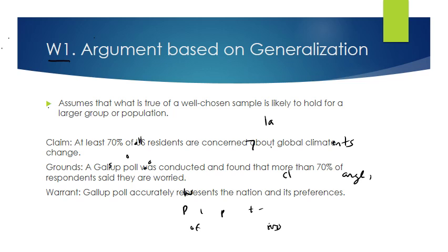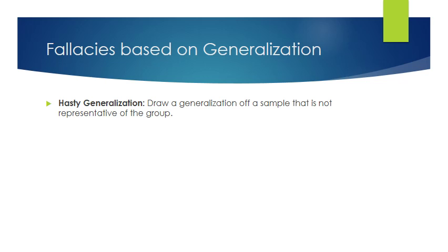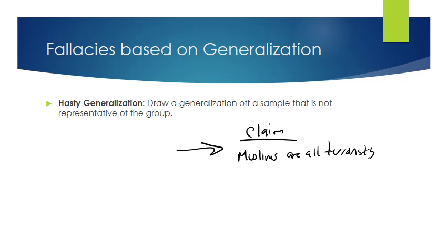Here's how that warrant can go bad. One fallacy is called the hasty generalization — this is where you draw a generalization about a sample that is not representative of the group. Basically you're generalizing about people based on a really bad sample.